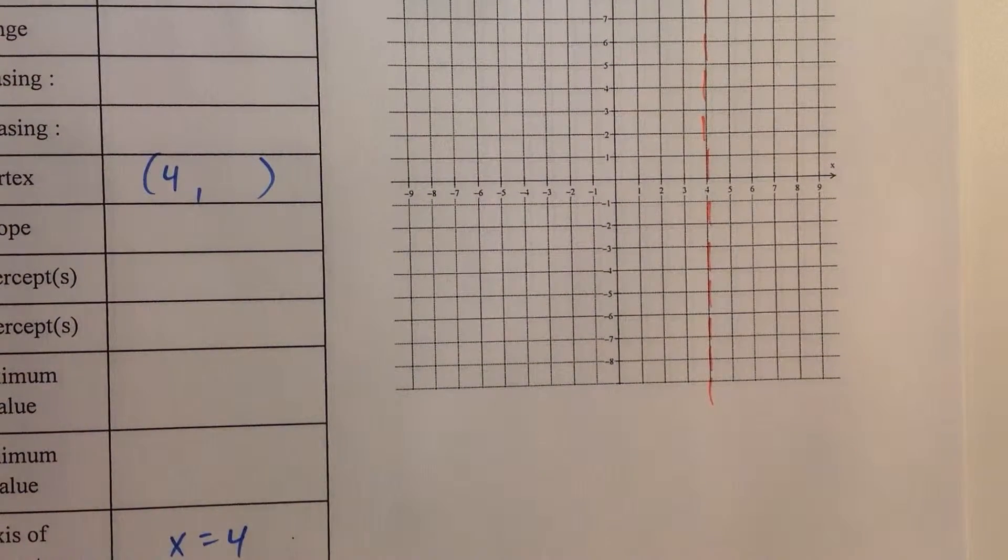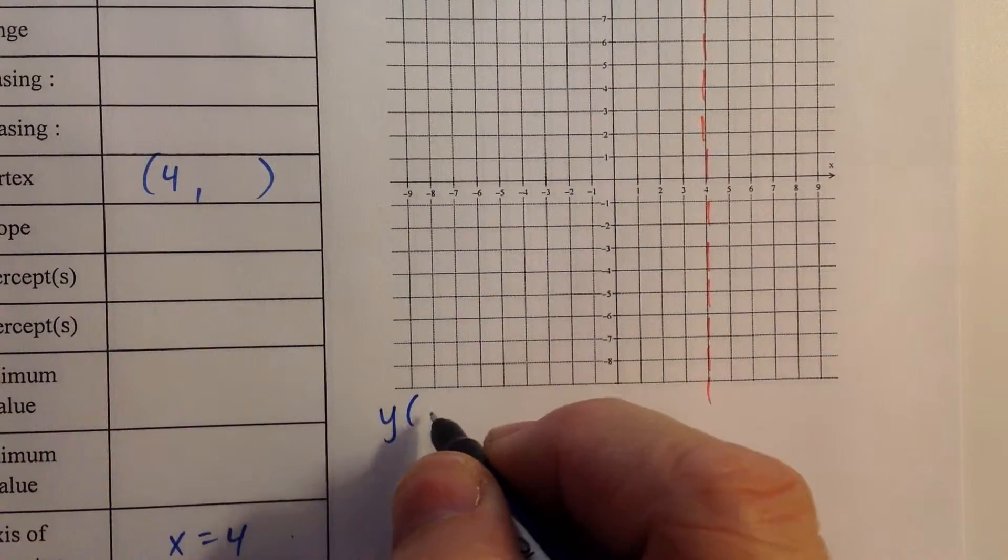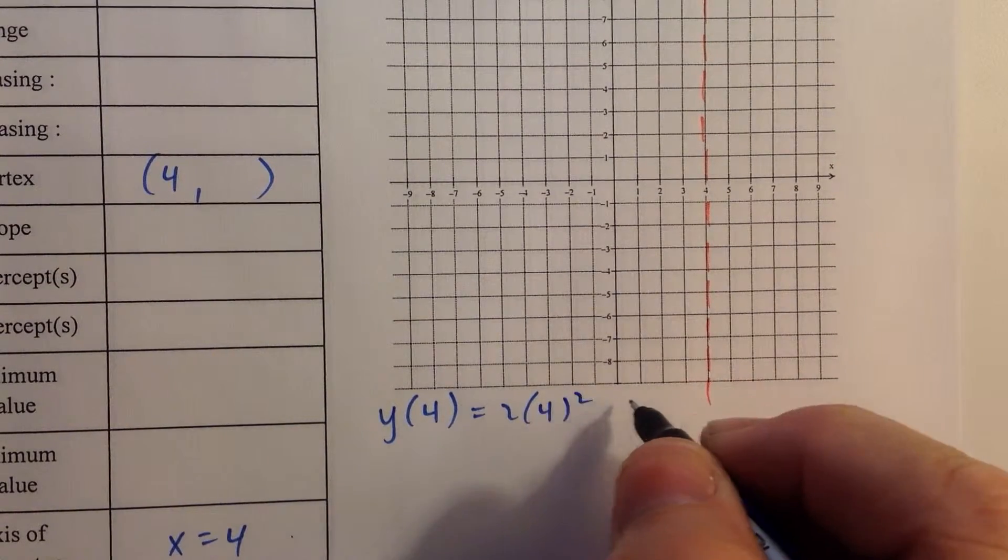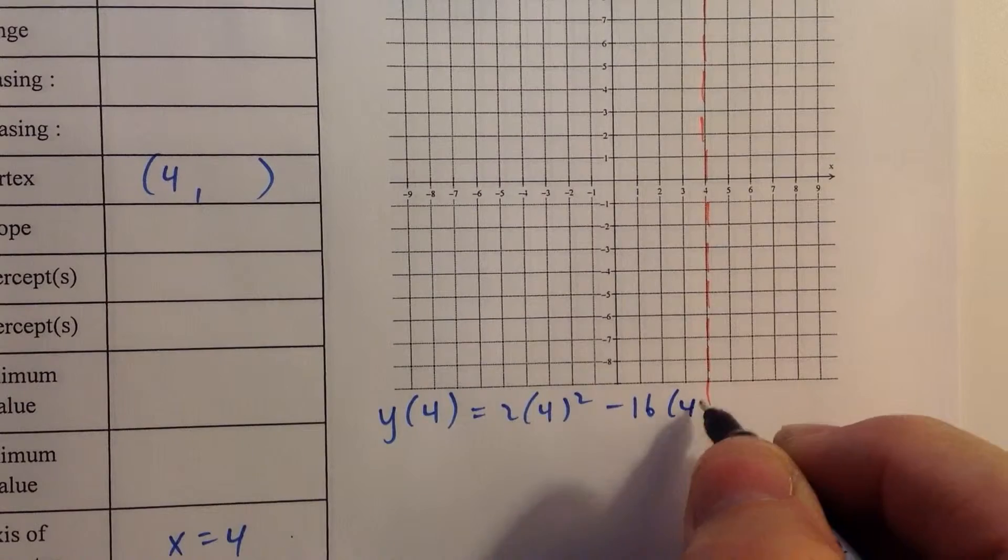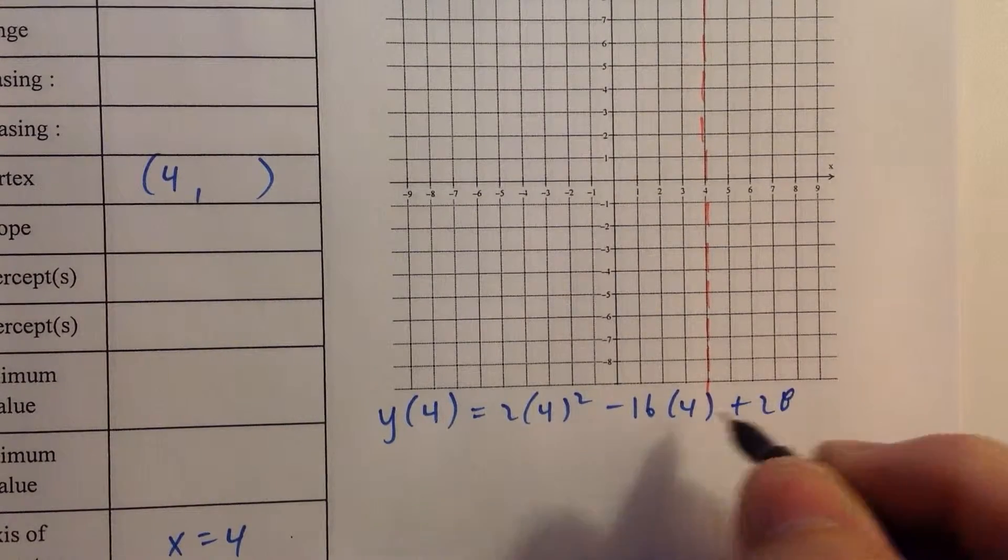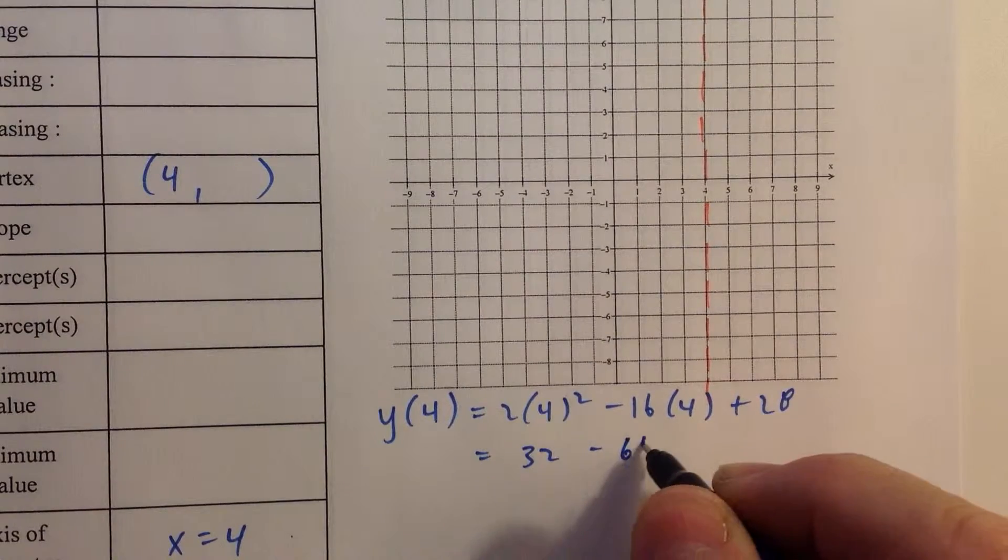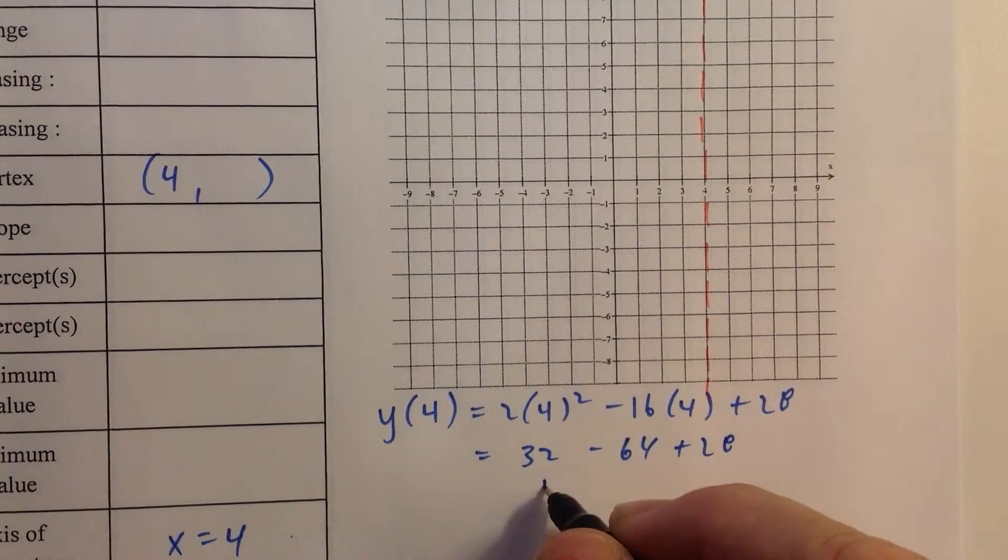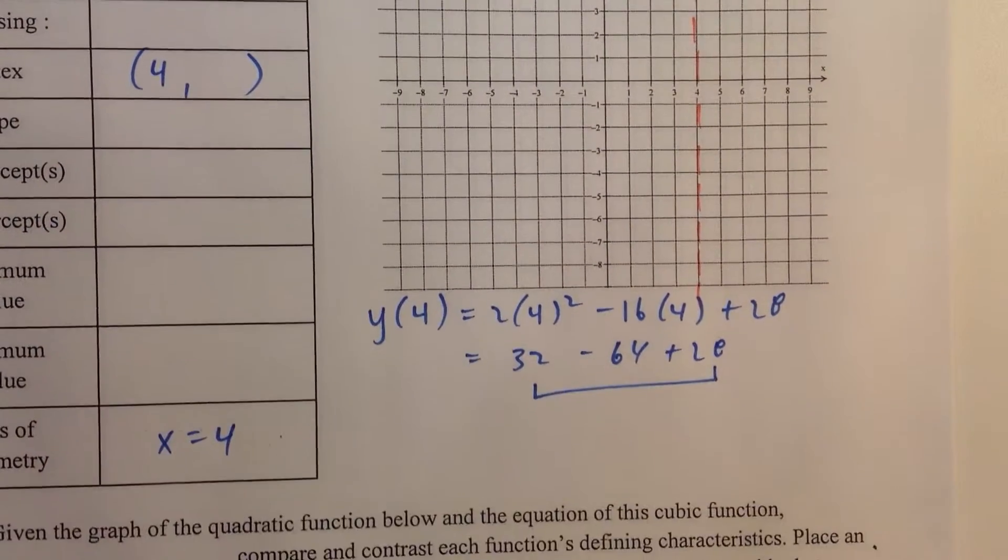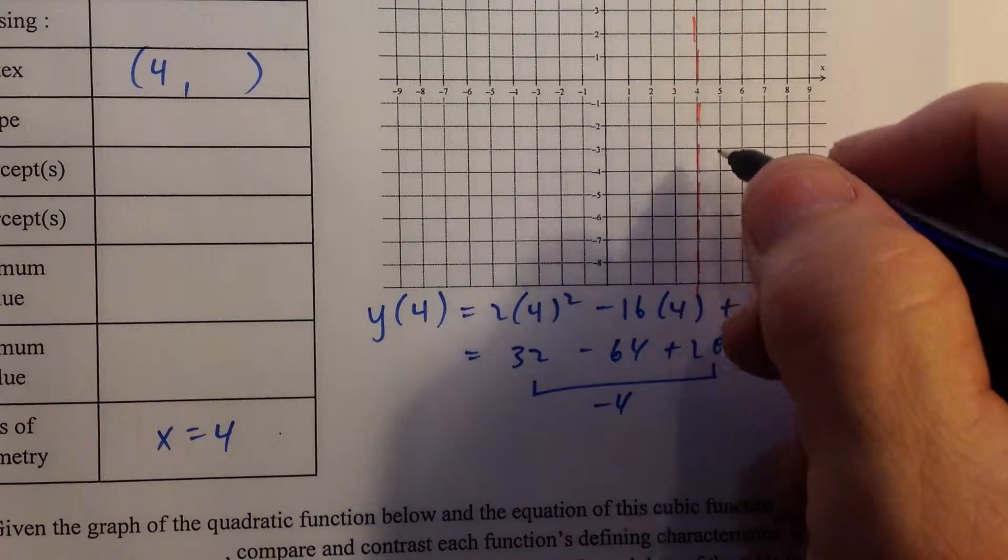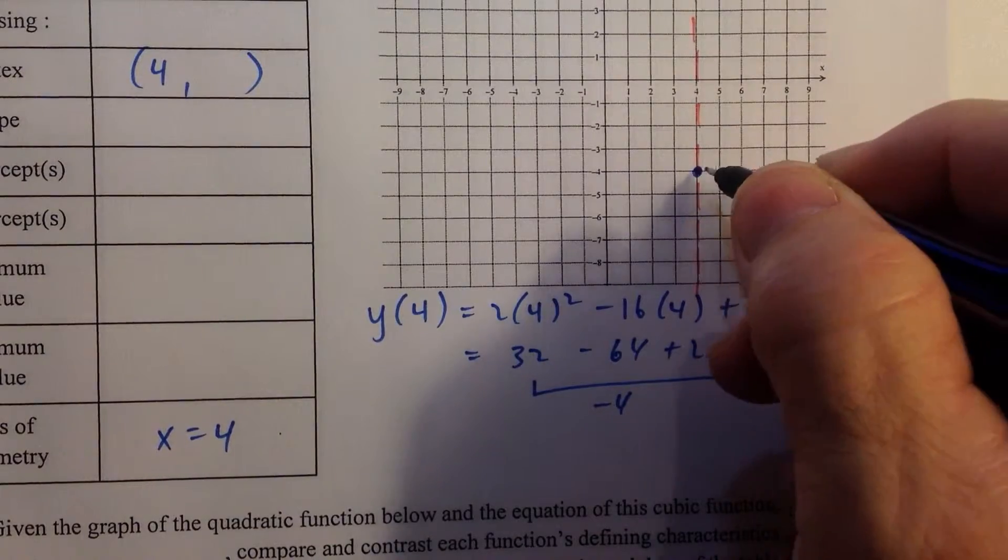Let's go ahead and find our y-coordinate of our axis of symmetry. y of 4 equals 2 times 4 squared minus 16 times 4 plus 28. So we have 2 times 16, that's 32 minus 64 plus 28. Let's group the positive numbers. 32 and 28 is 60. 60 minus 64 is negative 4. So the y-coordinate of the vertex is negative 4.